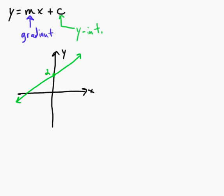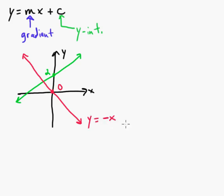If we want a negative gradient, we could draw a line like that. In this case the y-intercept would be 0, so that formula might be something like y equals negative x — they wouldn't really write the plus 0. This one might be something like y equals x plus 2.